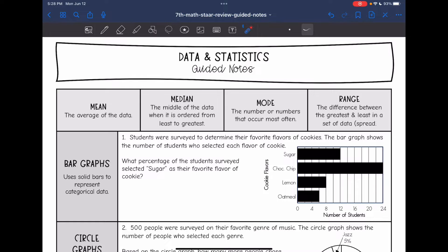Mode is the number or numbers that occur the most often. And then range is the difference between the greatest and least in a set of data. Basically it is the spread of the data.